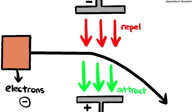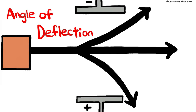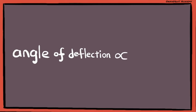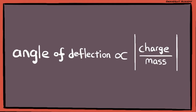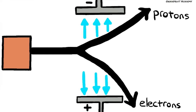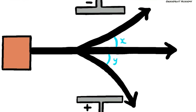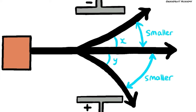Now comes the question: how do we know what is the angle of deflection for the protons and electrons? The angle of deflection is directly proportional to the magnitude of the charge-to-mass ratio of the particle. The larger the charge of the particle, the stronger the attraction towards the oppositely charged plate, hence there will be a greater angle of deflection. Conversely, the larger the mass of the particle, the heavier it is, so the more difficult it is to deviate towards the oppositely charged plate, hence the smaller the angle of deflection.